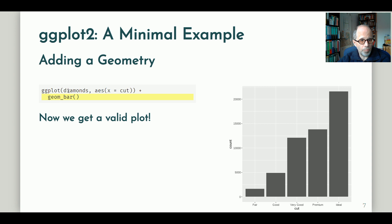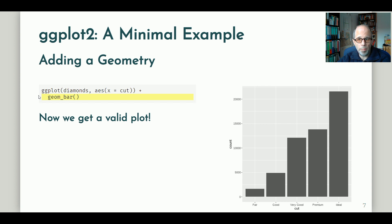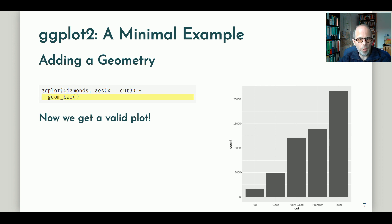In addition to the data and the aesthetic, I also specify a geometry — in this case geom_bar. The geom_bar function automatically calculates summary statistics, in this case counts for the five qualities of cuts. This is more or less the minimum basic syntax needed to build a valid plot in ggplot2, specifying the three basic layers with as little code as possible. We now have a valid plot, and I hope you see that the grammar is not too complicated.